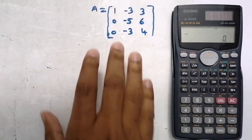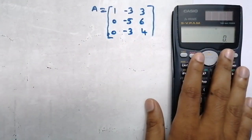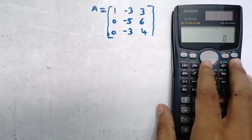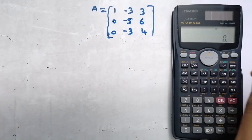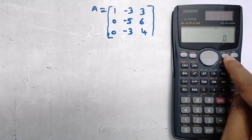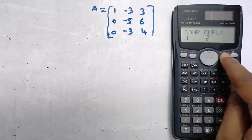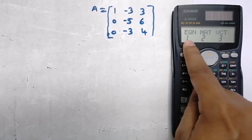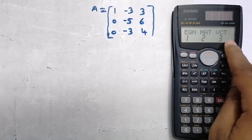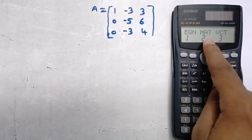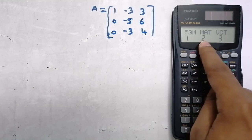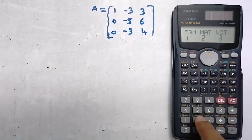Now you need to store the matrix in the calculator. For that purpose, press Mode 3 times — you will see options 1, 2, and 3, showing Equation, Matrix, and Vector. To get into Matrix mode, press number 2.